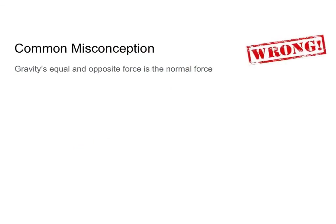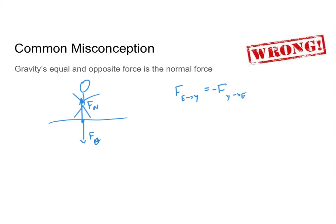One common misconception about Newton's third law is that gravity's equal and opposite force is the normal force. I can see why you might think that — if you're standing on the ground, gravity is pulling you down and the normal force is pushing you up, and they must be equal and opposite because you're not falling through the ground. But the actual equal and opposite force to the Earth's gravitational pull on you is your gravitational pull on the Earth. You are pulling on the Earth with exactly as much force as the Earth is pulling on you. However, you are the one to accelerate much more, because the Earth has a much greater mass.